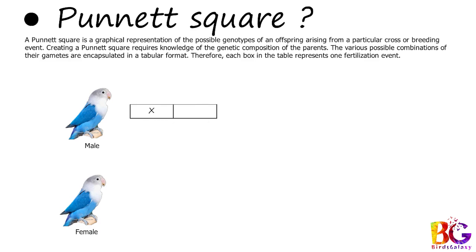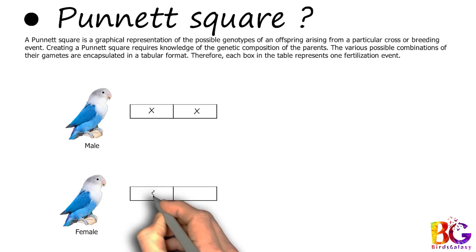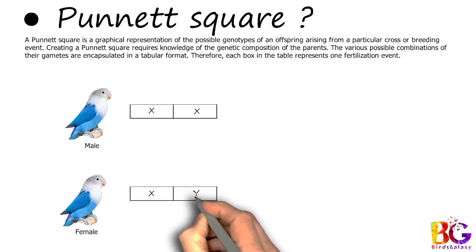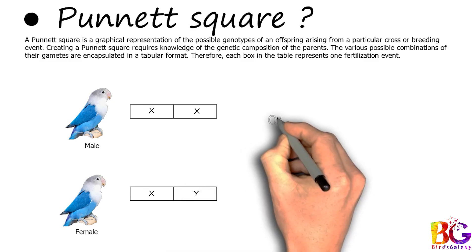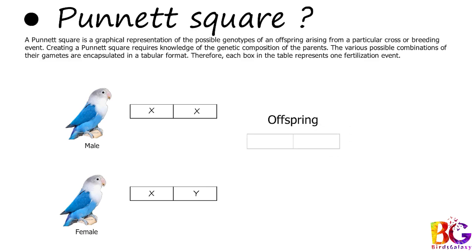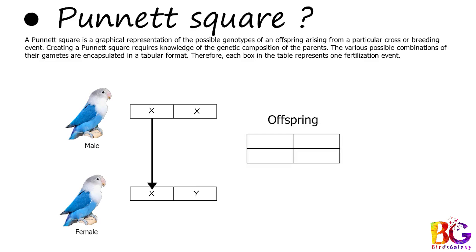For example, we are taking both birds as the same — male and female bluefisher. Here we are talking about genetics, not mutations, so it's easy to understand — we are using a simple bird. So what will the offspring be if we breed these two birds? Look carefully in the Punnett table: we are taking chromosomes XX from male and XY from female. Now let's calculate what will be the offspring in the Punnett table.